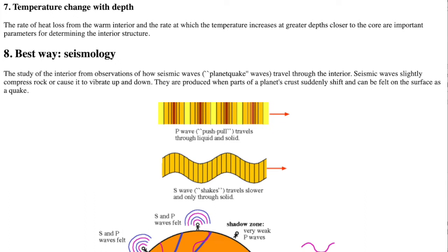Seismic waves slightly compress rock or cause it to vibrate up and down. They are produced when parts of a planet's crust suddenly shift and can be felt on the surface as a quake. The speed, amplitude, and direction the seismic waves move depend on the particular type of wave and the material they pass through. Just as a physician can use an ultrasound to get a picture of your anatomy or of a fetus, you can use seismic waves to get a picture of the Earth's interior.